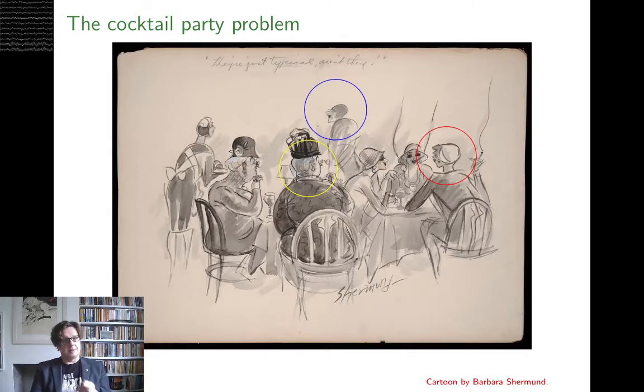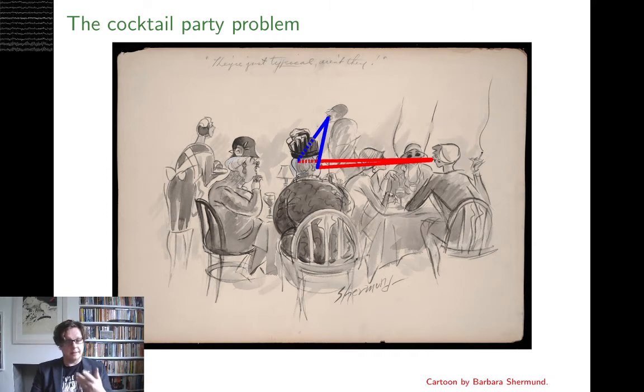So back to this problem here, this is the sort of simplest version. There's two sources of noise, the red circle lady and the blue circle lady trying to tell one from the other. And maybe the strategy that she's going to use is that she has two ears. So in one ear, you get one combination of the blue circle lady voice and the red circle lady's voice. And in the other ear, you get a slightly different combination because of the width between the ears.